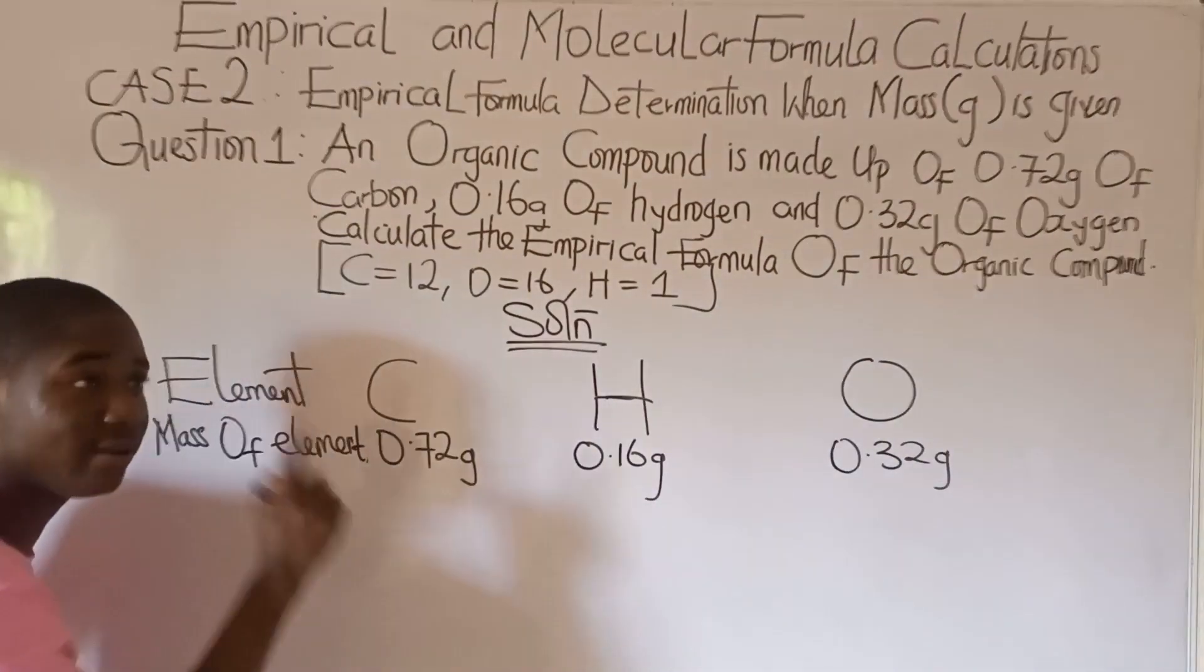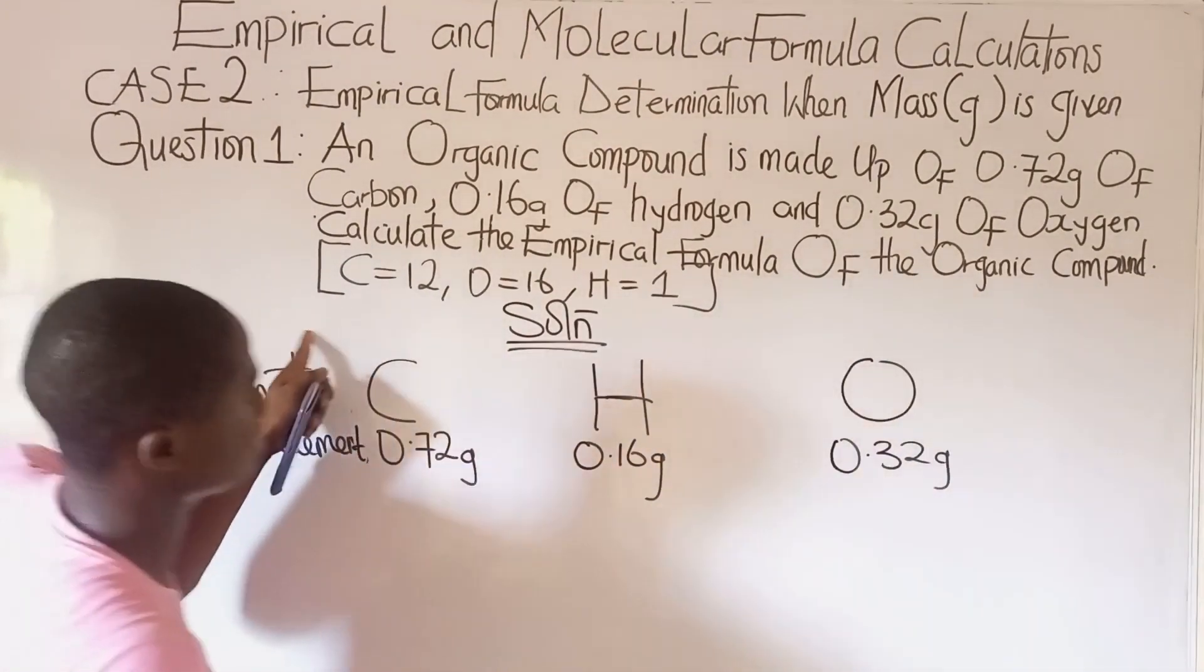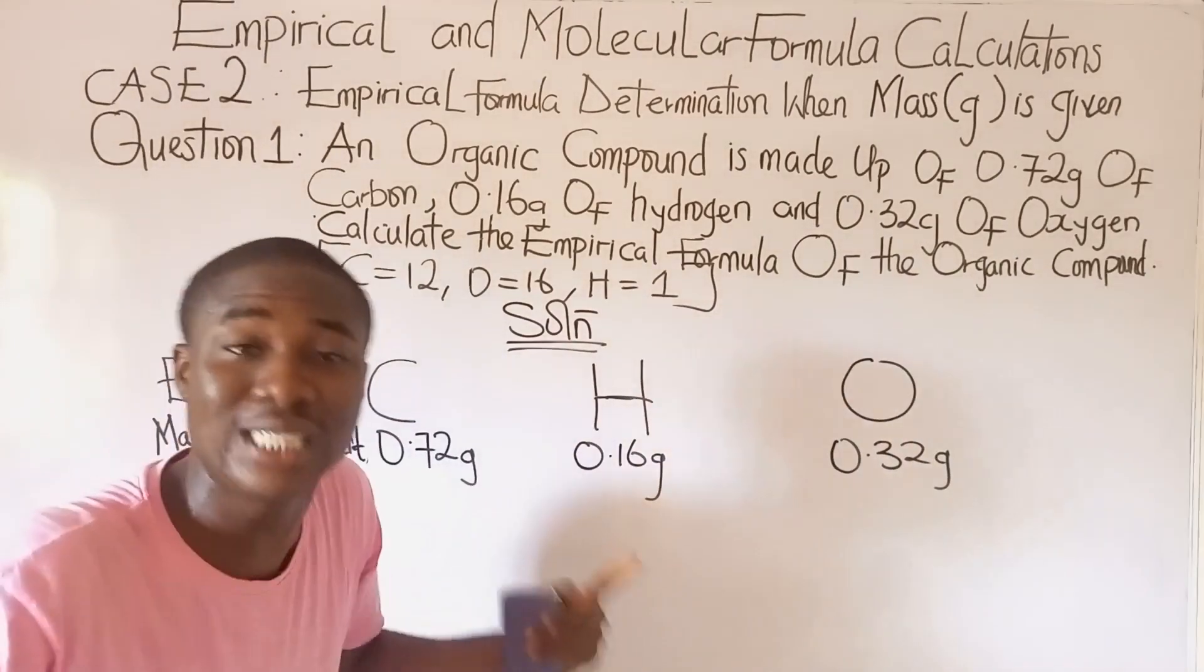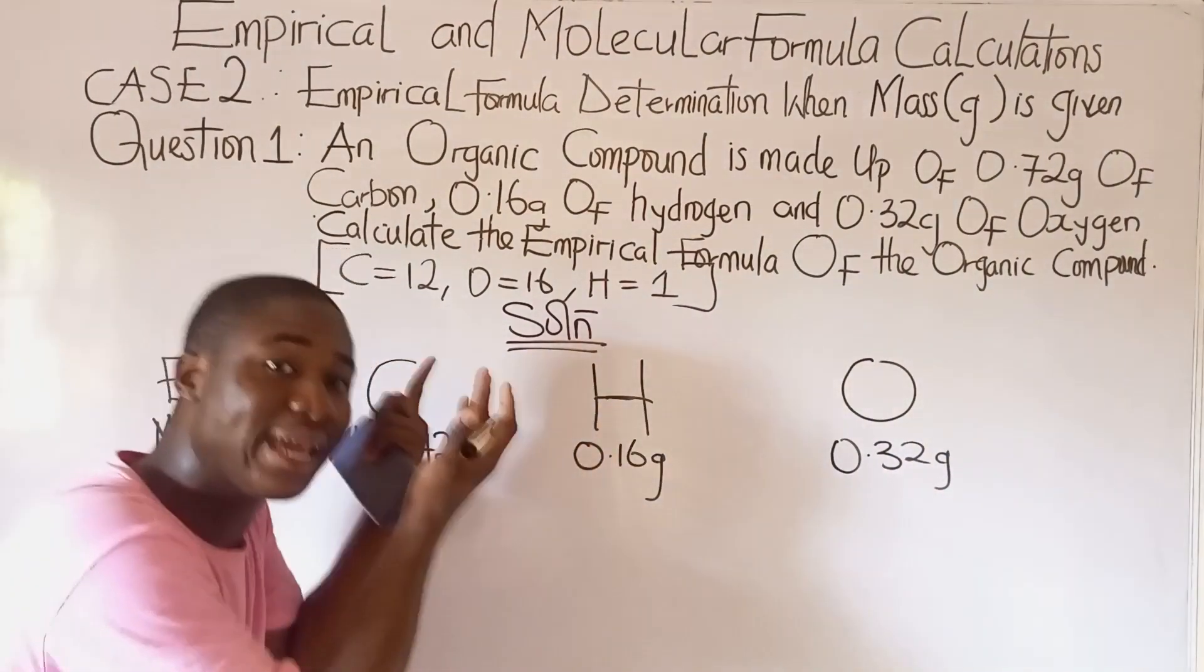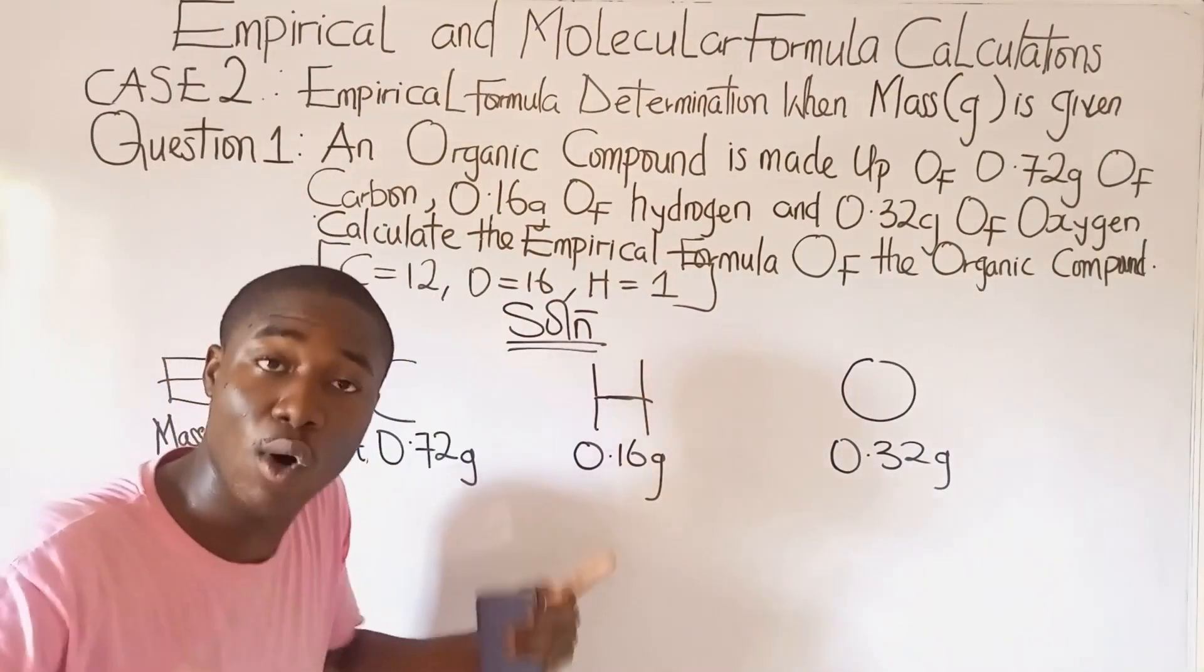The next step to follow is to divide by the atomic masses. These are the atomic masses. It's still the same step as the first case. Nothing changed. It's just that here is mass and the other was percentage.